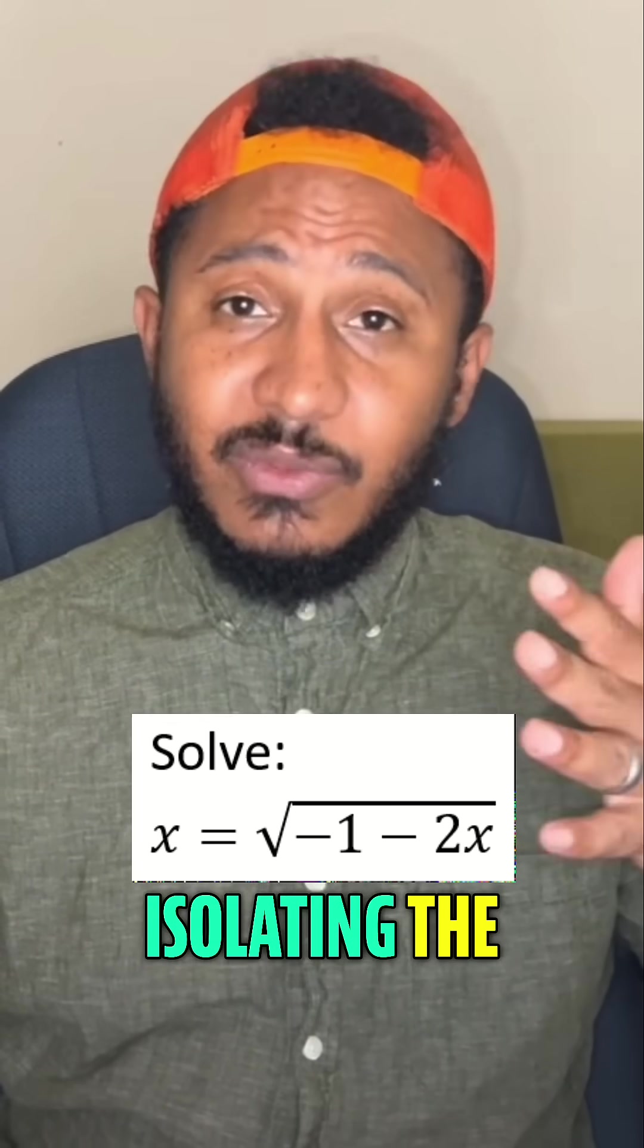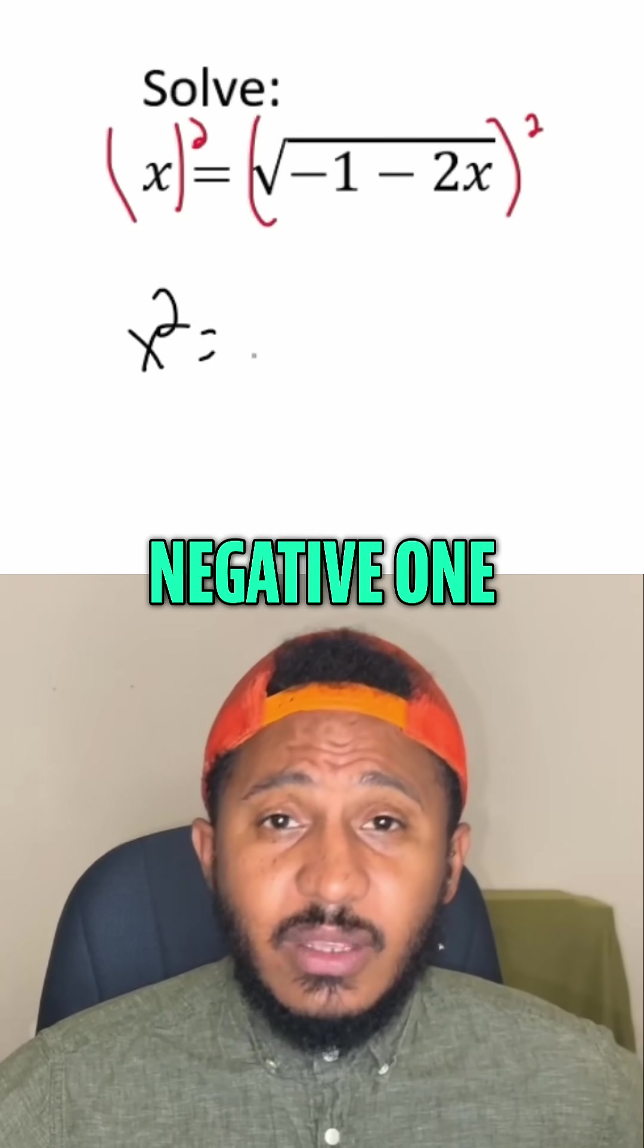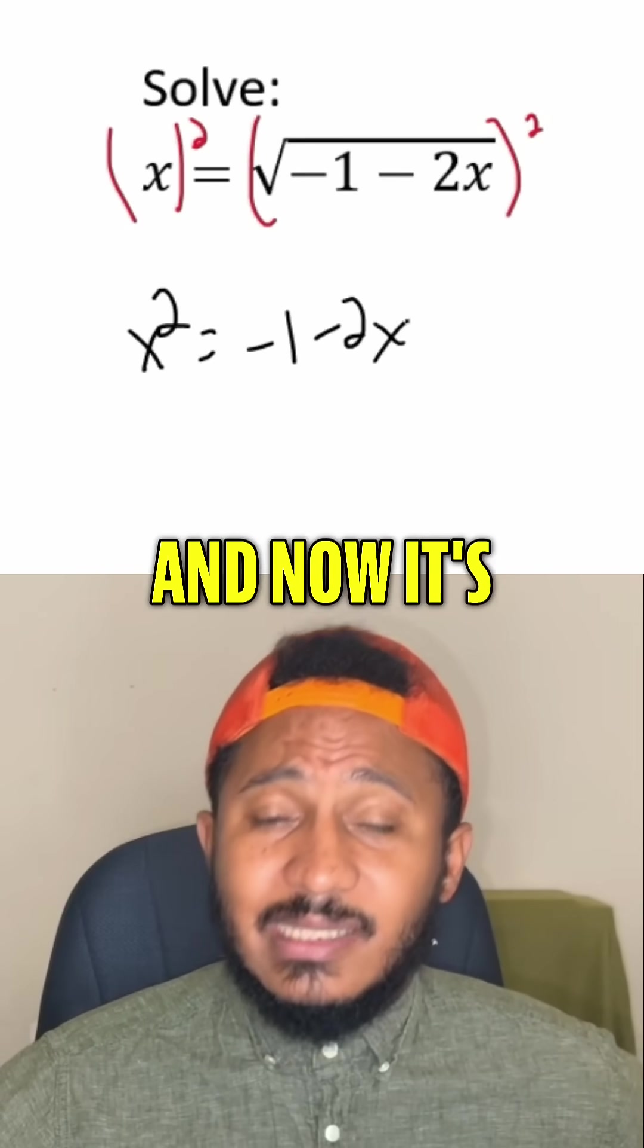So how we solve this equation is by first isolating the radical. That's already done. So then squaring both sides. So squaring both sides here, we get x squared equals negative 1 minus 2x.